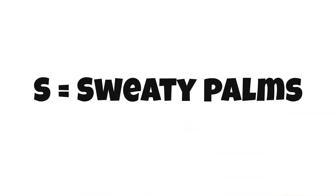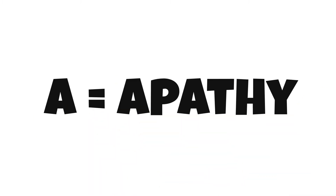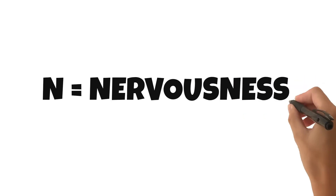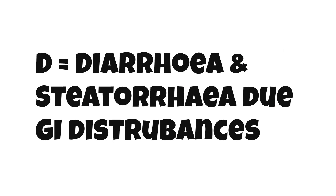S equals sweaty palms, which refers to excessive sweating — for example, sweating when you are not exercising or sweating at random times. A equals increased level of apathy. N equals increased levels of nervousness and depression. D equals diarrhea and steatorrhea due to GI disturbances.